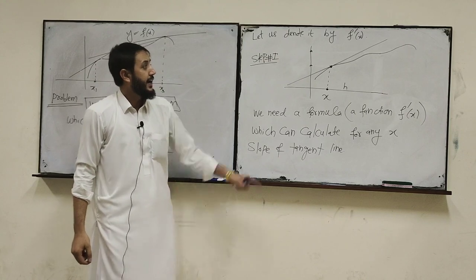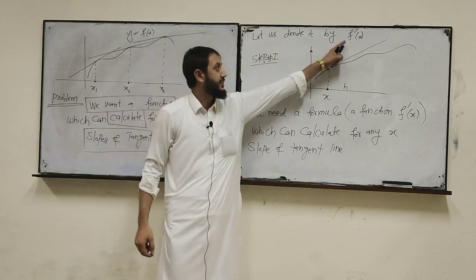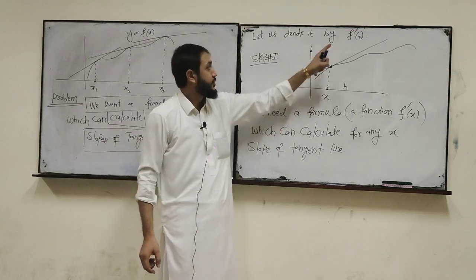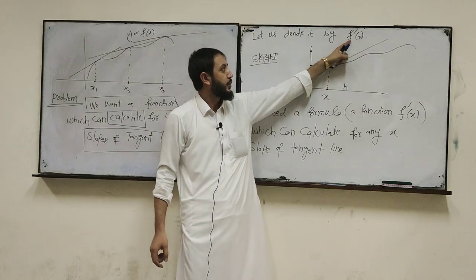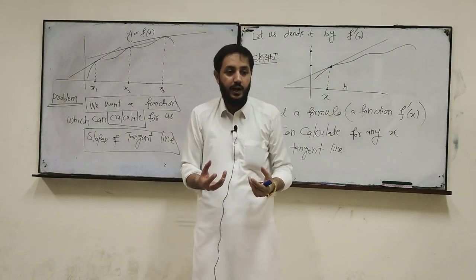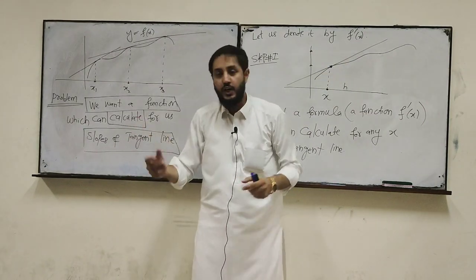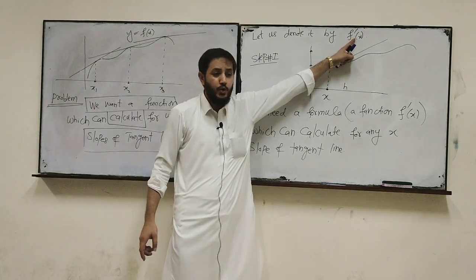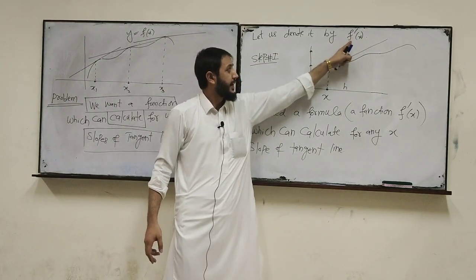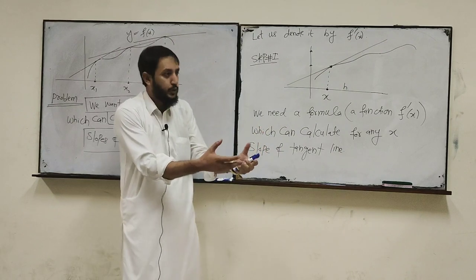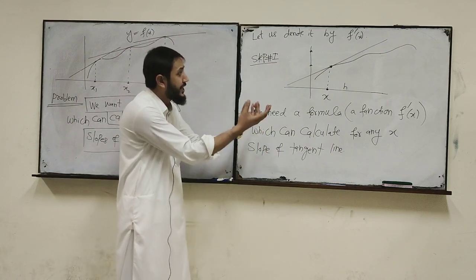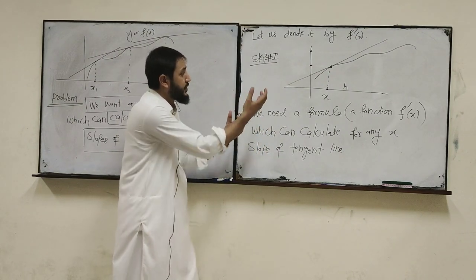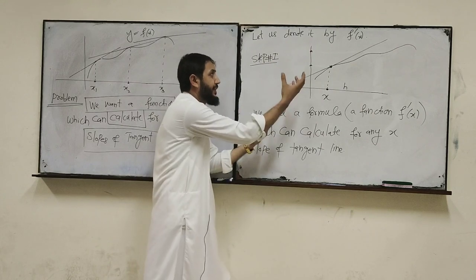Let us denote it by f prime of x. We want a formula for this function. What will this function give us? Slopes of tangent lines. We will put values of x and it will return slopes. So we need this formula which can give us slopes of tangent lines.